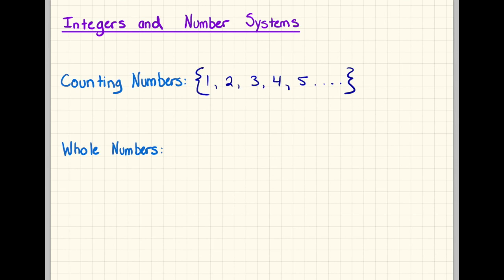A whole number is kind of exactly like a counting number, except in this system we actually include the number 0. So we'll start at 0, 1, 2, 3, 4, and so on. You'll notice that the number 1 and the number 2 are both counting numbers and whole numbers, because numbers can be classified as more than one thing. They can be in more than one system.